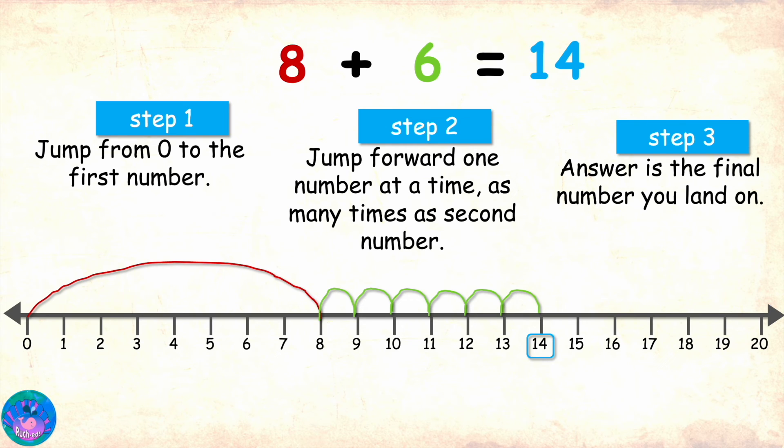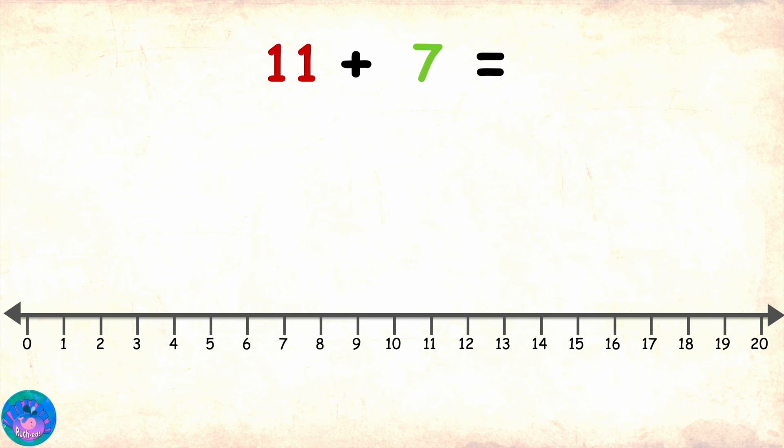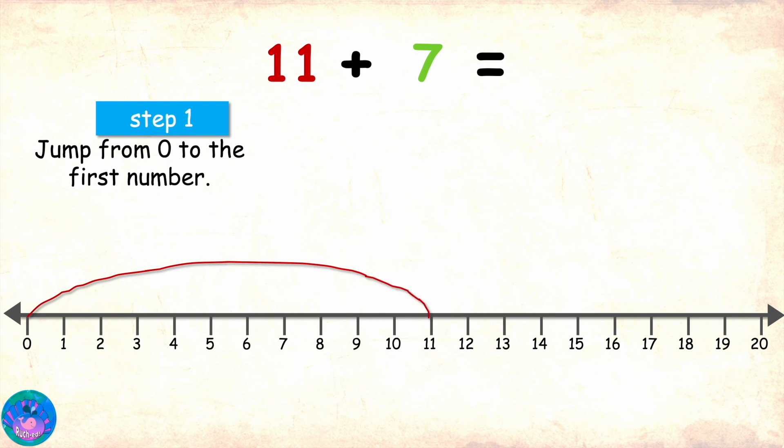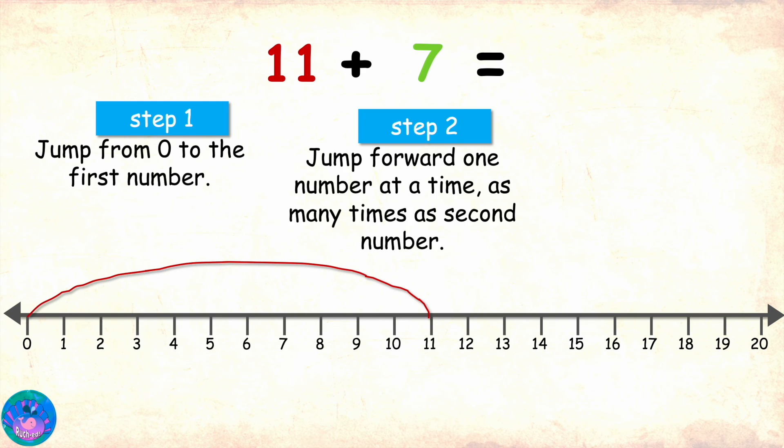Try it again. Can I do one more please? Sure. Solve 11 plus 7. Step 2 is to jump forward one number at a time as many times as the second number 7.